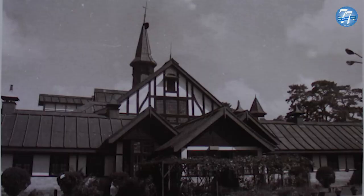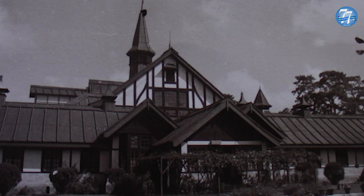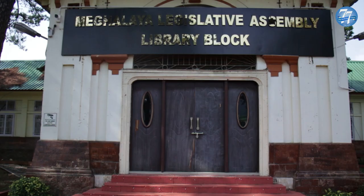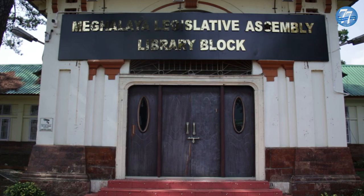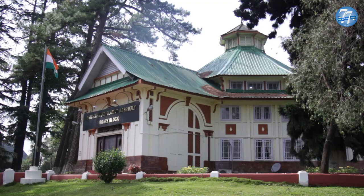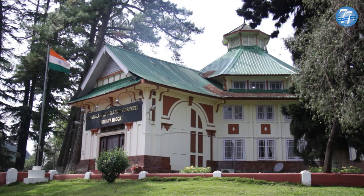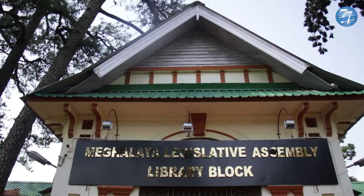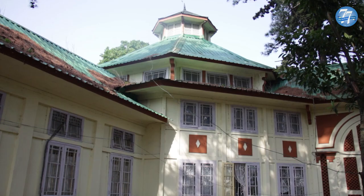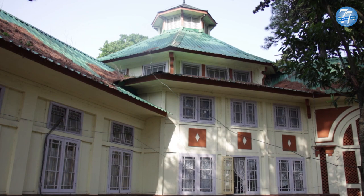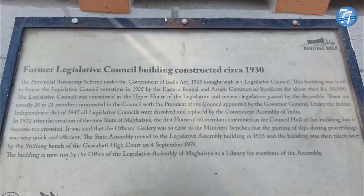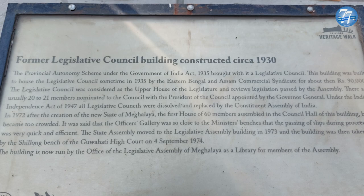The state assembly moved to the imposing wooden structure only in 1973, when the Assam assembly vacated the building. One may be unaware that the present assembly library housed the All India Radio Station and the Gauhati High Court Shillong Bench as well. This old Assam-type structure served as the old council hall, built originally for 36 councillors, sometime back in 1935.